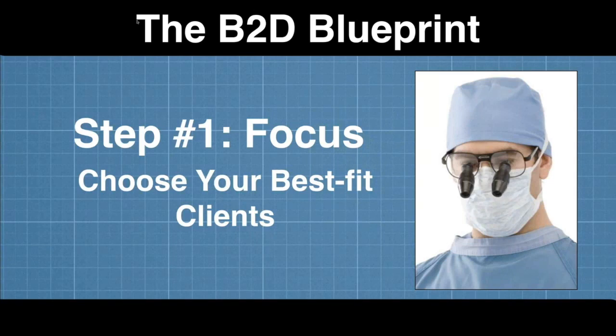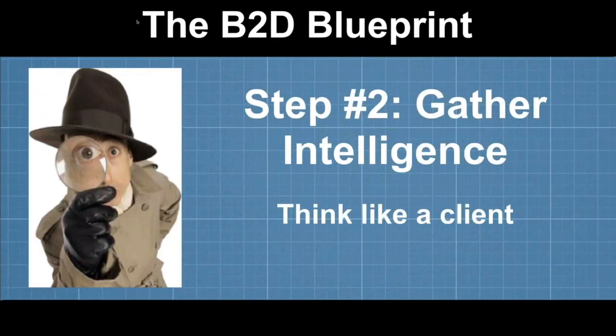The first step is to define your focus. Don't try to be all things to all doctors. You want to select three to five groups of doctors that have a similar source of financial pain, who network with each other so they can talk about you, and with whom you have affinity. Step number two is to gather intelligence — be able to see the world from the doctor's eyes. This intelligence will allow you to be at the right place and the right time with the right marketing message, using informational interviews as your basic tool.